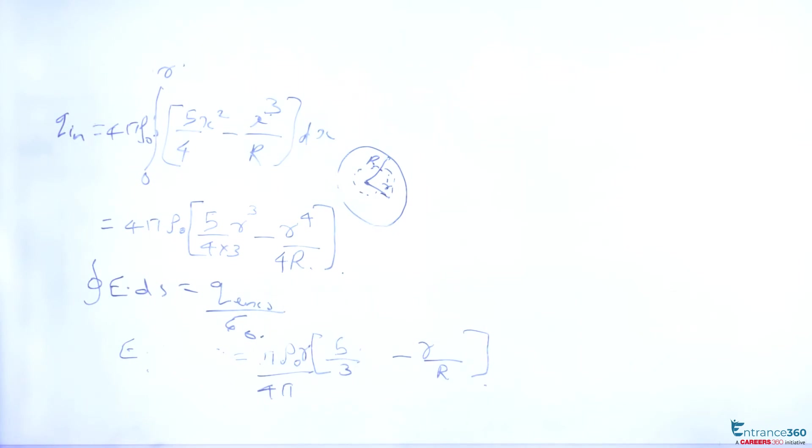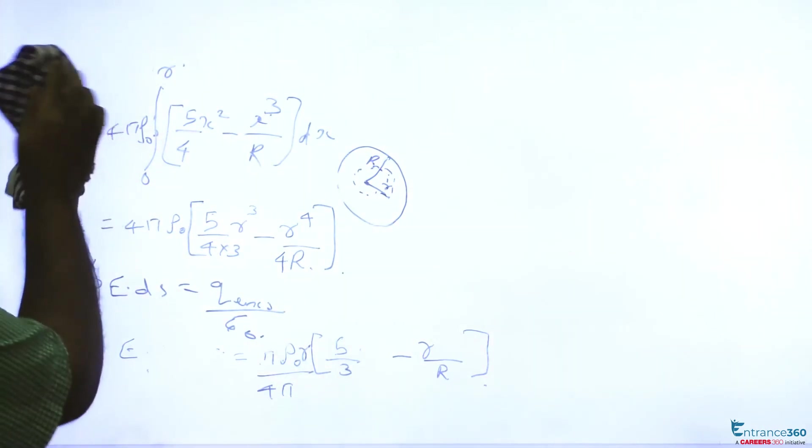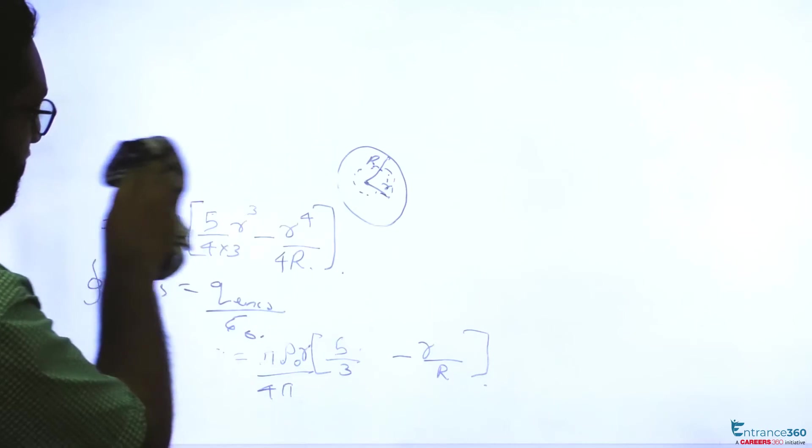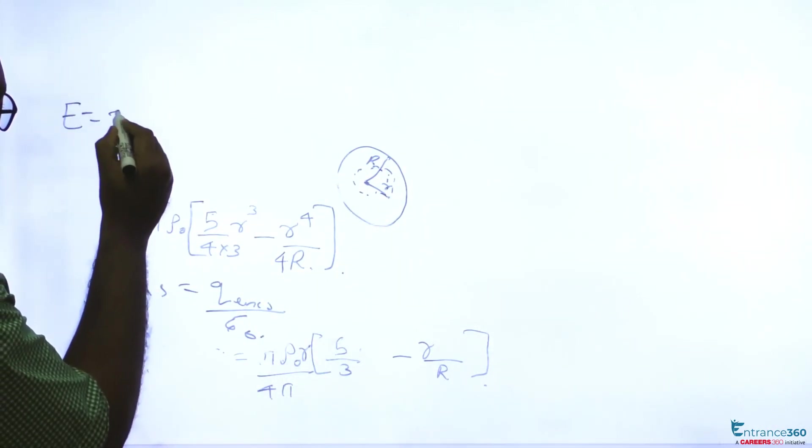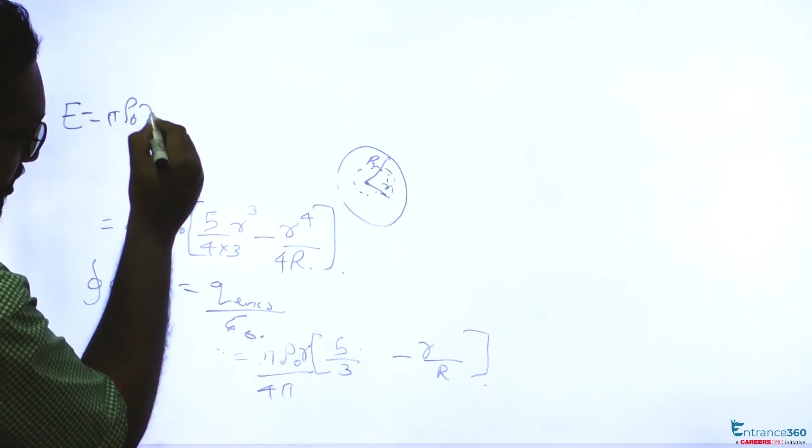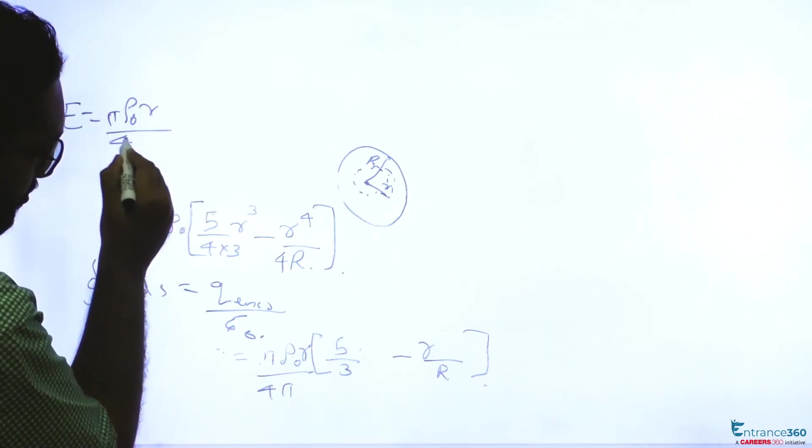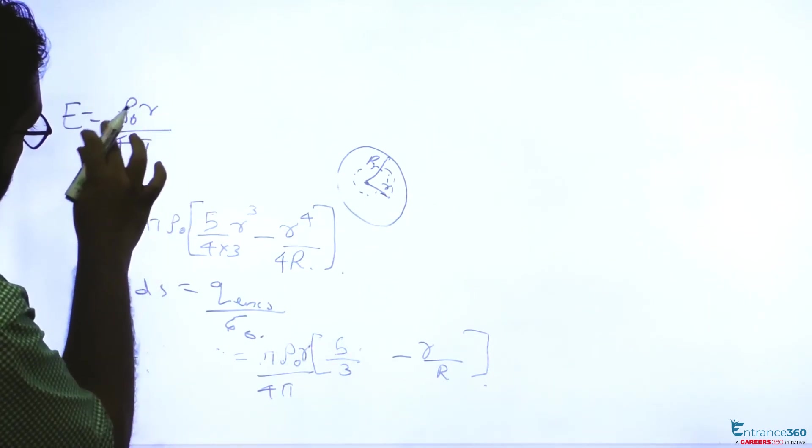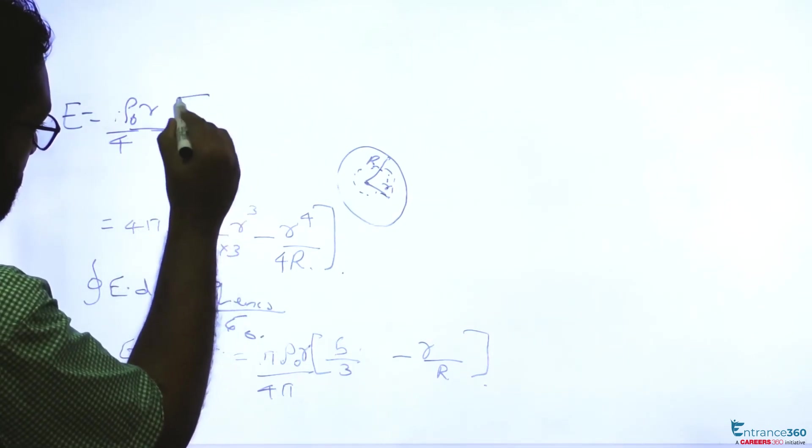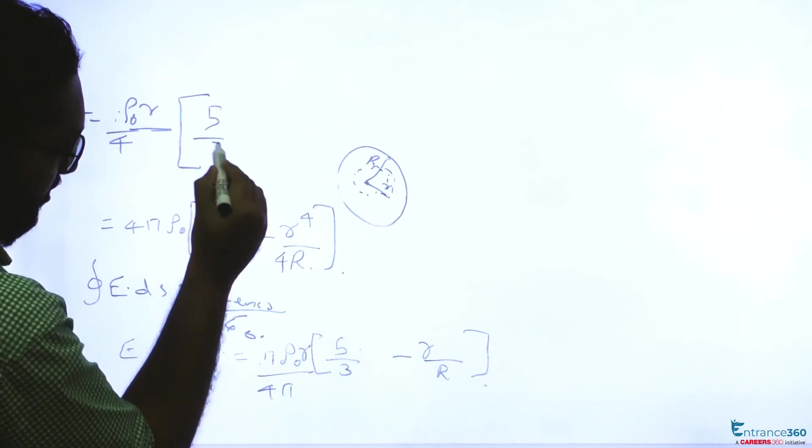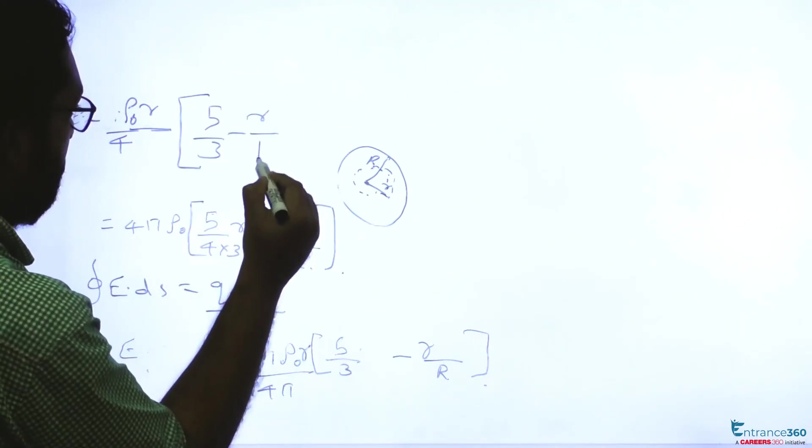So the electric field finally is equal to πρ₀r/4π. This π also gets cancelled. 5/3 - r/R.